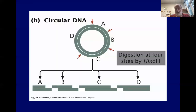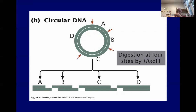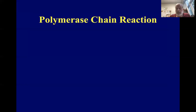This shows restriction fragments — four of them — generated by cutting a circular DNA molecule with HindIII. There are four sites on the molecule, and each restriction fragment is labeled A, B, C, and D. That's all for restriction enzymes; we'll come back to them again when we discuss cloning.